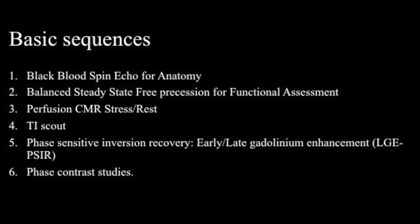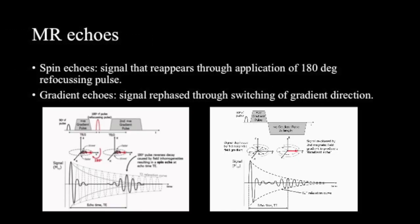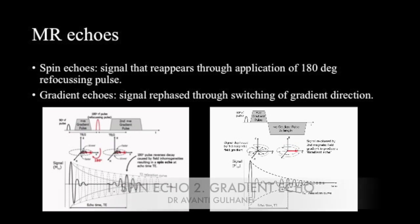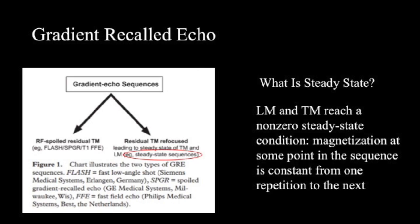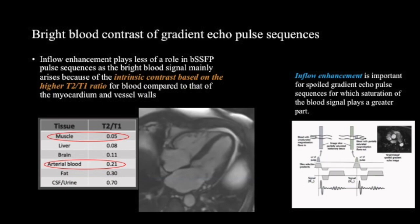Before we begin discussing the sequences, let us first recall the basics. There are two types of MR echoes acquired after an RF application. One is a spin echo, which is a signal that reappears after a 180-degree refocusing pulse. Another is a gradient echo, which is a signal that is rephased through switching of the gradient direction. Figures illustrate the same.